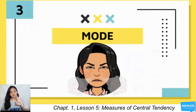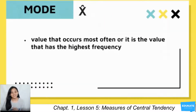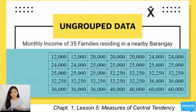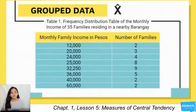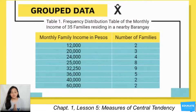The last measure of central tendency is the mode. The mode is the value that occurs most often — the value with the highest frequency. In grouped data, we can see the frequencies. Looking at the counts 2, 3, 4, 8, 9, 5, 2, and 2, the data with the highest frequency is 32,250 with a frequency of 9, meaning 9 families have that monthly income.